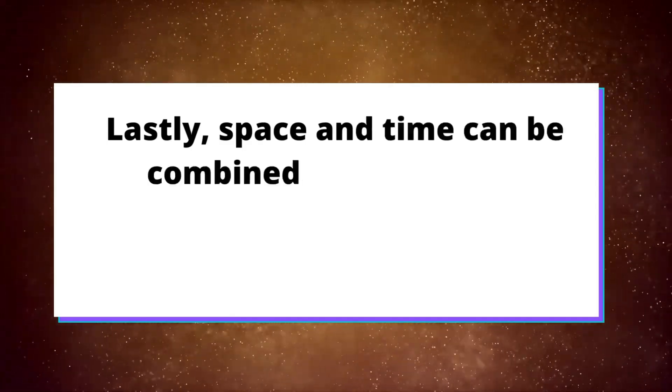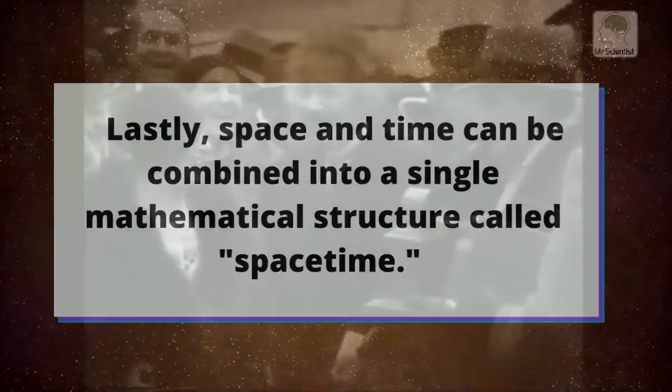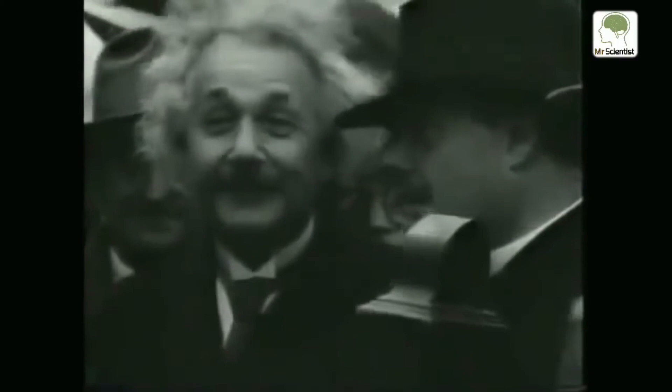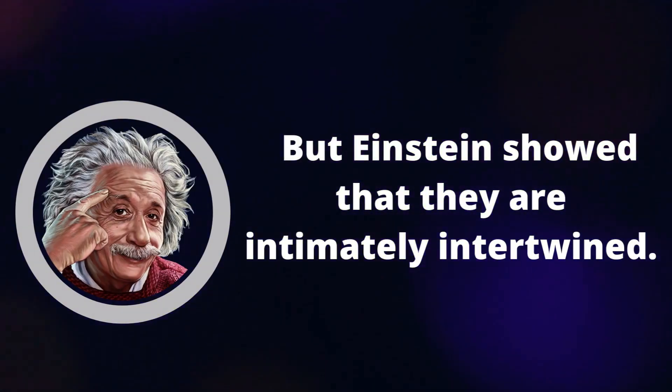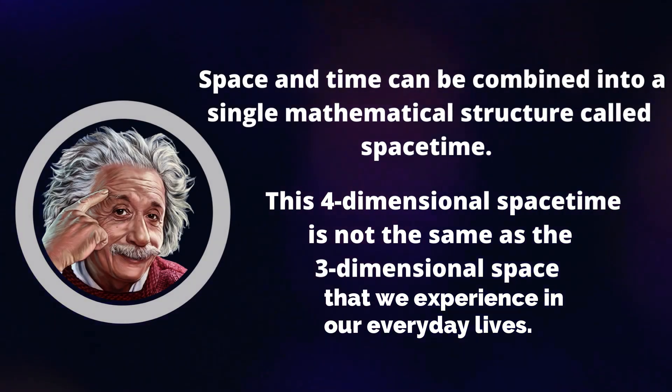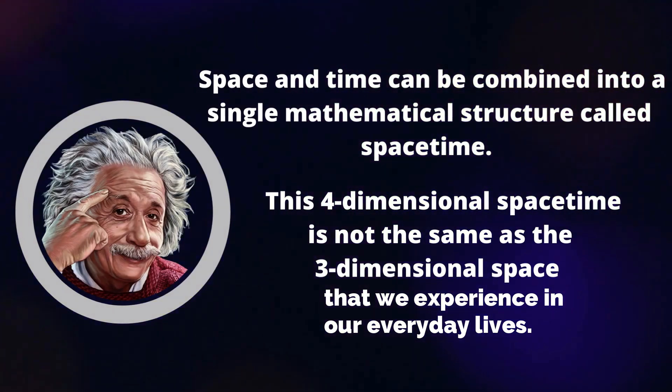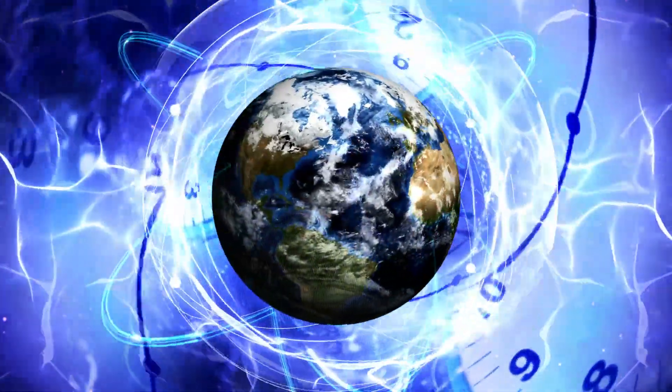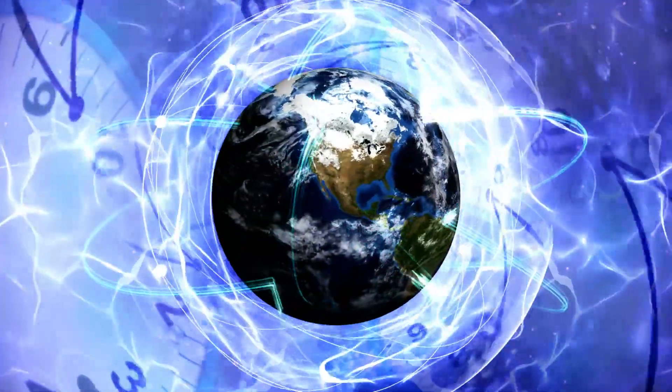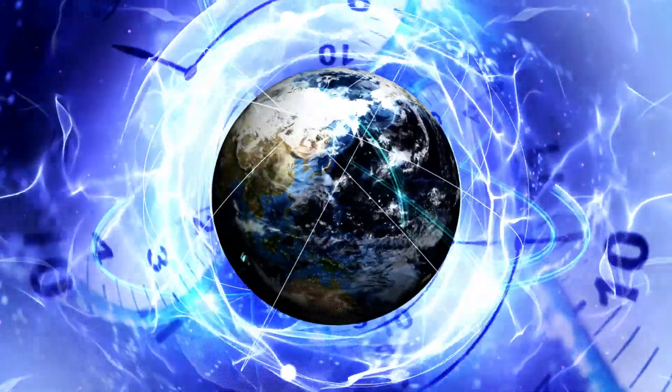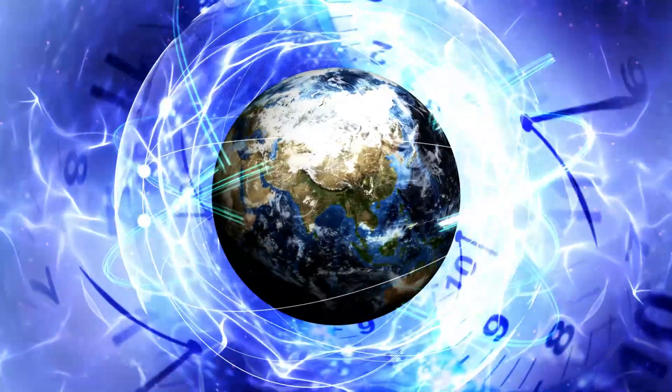Lastly, space and time can be combined into a single mathematical structure called spacetime. Albert Einstein changed the way we think about space and time. Before his theory of relativity, they were considered two separate and independent concepts. But Einstein showed that they are intimately intertwined. Space and time can be combined into a single mathematical structure called spacetime. This four-dimensional spacetime is not the same as the three-dimensional space that we experience in our everyday lives. It is a curved, dynamic spacetime that is shaped by the presence of matter and energy. Spacetime is also relative, meaning that it is affected by an observer's frame of reference. All of this may sound complicated, but it simply means that space and time are not as simple as we once thought.